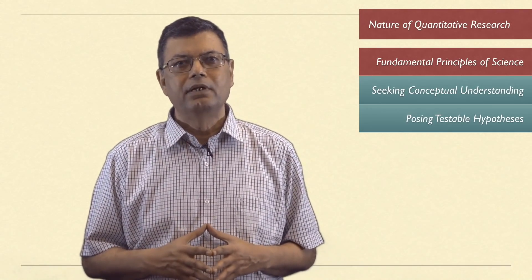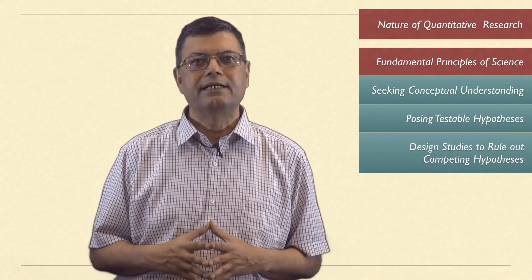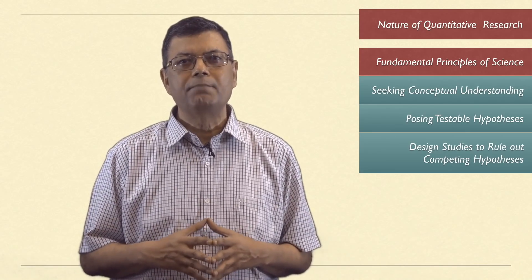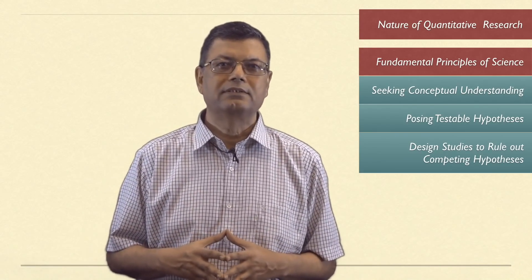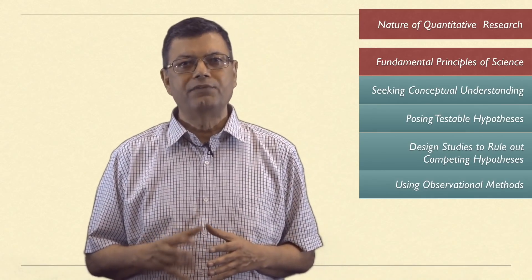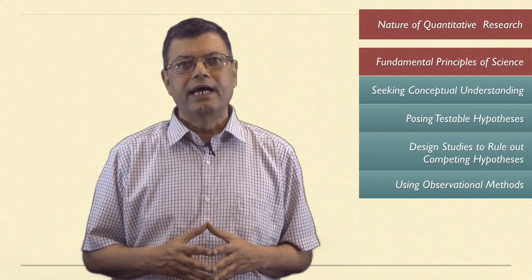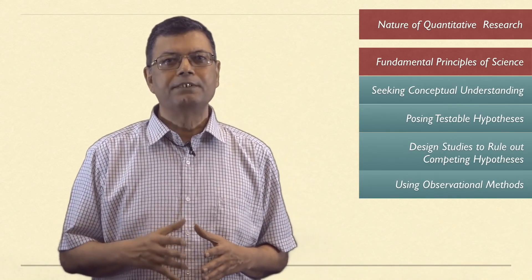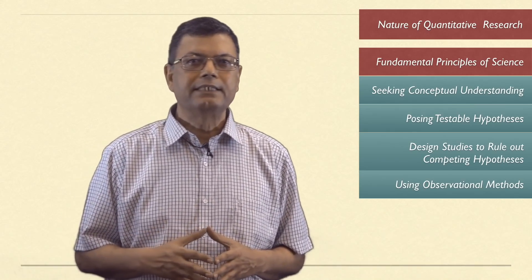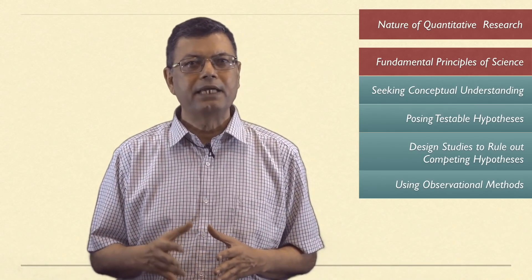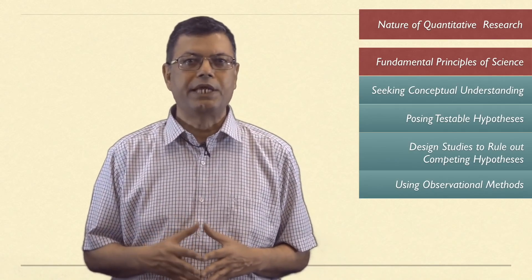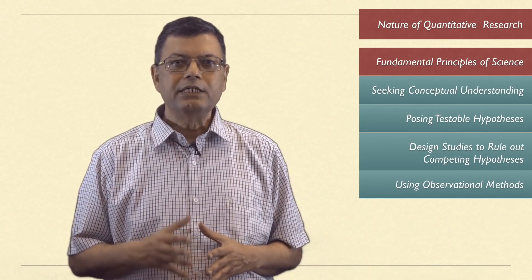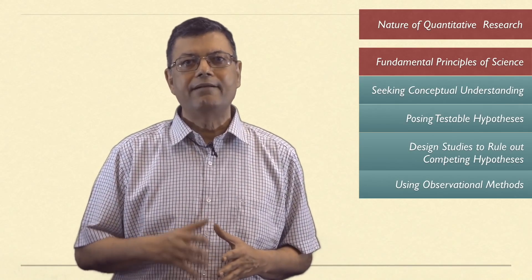The second principle is posing empirically testable and refutable hypotheses. The third principle is designing studies that test and can rule out competing counter hypotheses. Fourthly, using observational methods linked to theory that enable other scientists to verify their accuracy. And the final principle is recognizing the importance of both independent replication and generalization — that is, studies should be testable, verifiable and replicable.